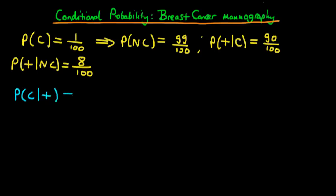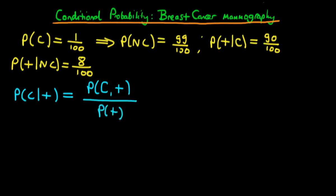We already know how to go about working this out. From the previous video, this is given by the probability that an individual has cancer and they test positive — the joint probability — divided through by the probability that an individual actually tests positive.